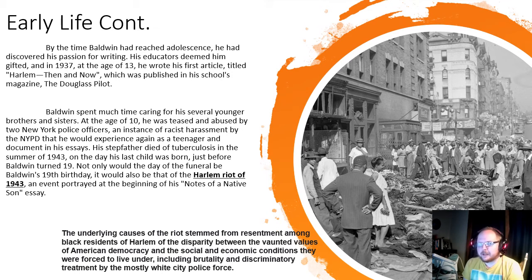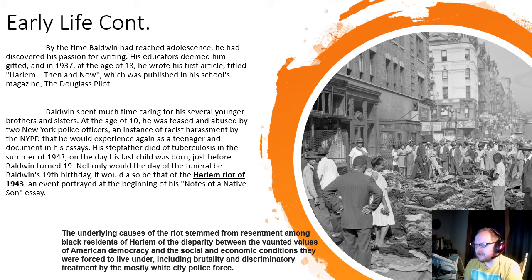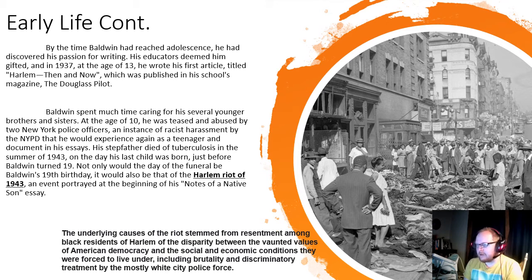By the time he reached adolescence, he discovered his passion for writing. His educators deemed him gifted, and in 1937 at age 13 he wrote his first article, titled 'Harlem, Then and Now,' published in his school's magazine, The Douglas Pilot. At age 10, he was teased and abused by two New York police officers — an instance of racist harassment by the NYPD that he would experience again as a teenager and document in his essays. His stepfather died of tuberculosis in the summer of 1943 on the day his last child was born, just before Baldwin turned 19. The day of his stepfather's funeral was also Baldwin's 19th birthday — and the day of the Harlem Riot of 1943, an event portrayed in the beginning of his 'Notes of a Native Son' essay.